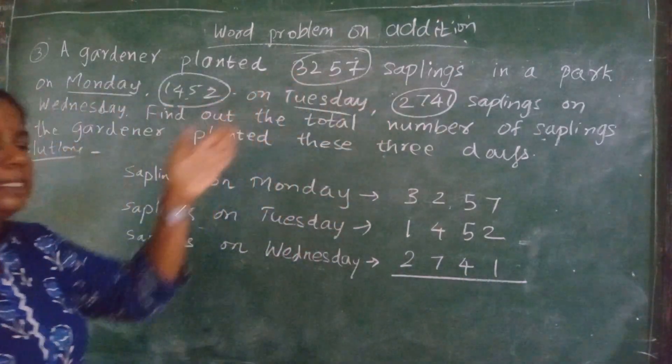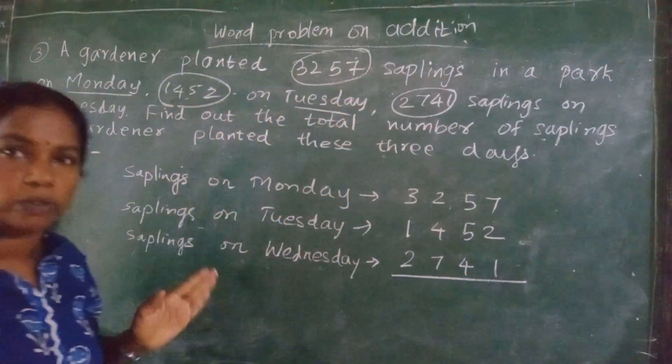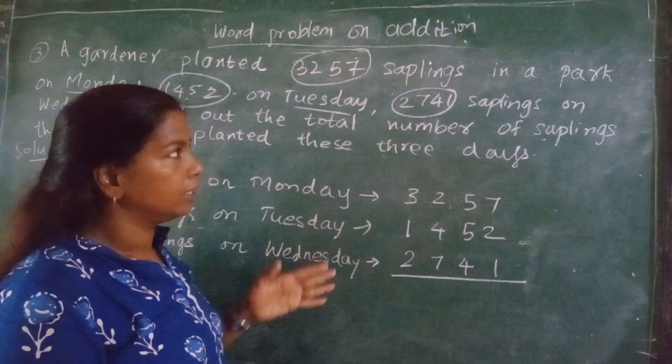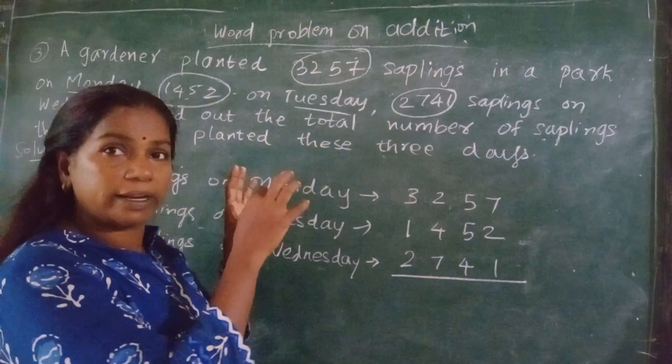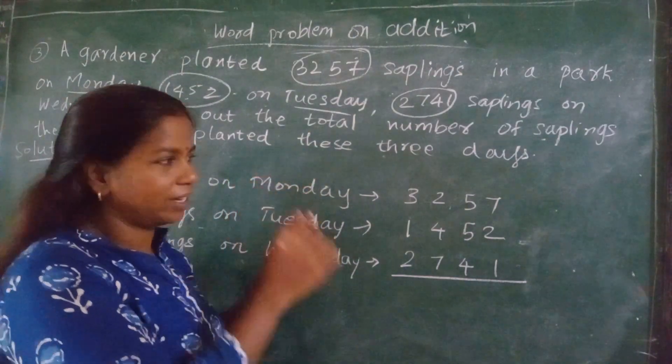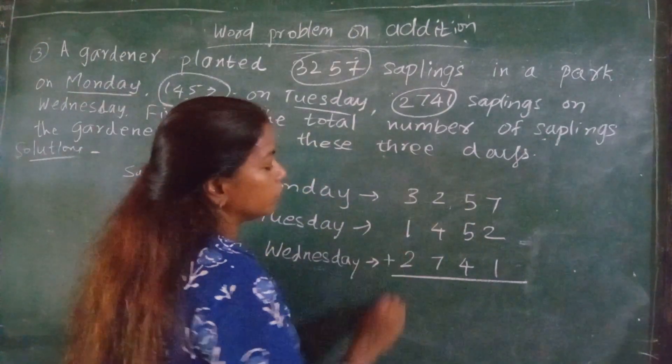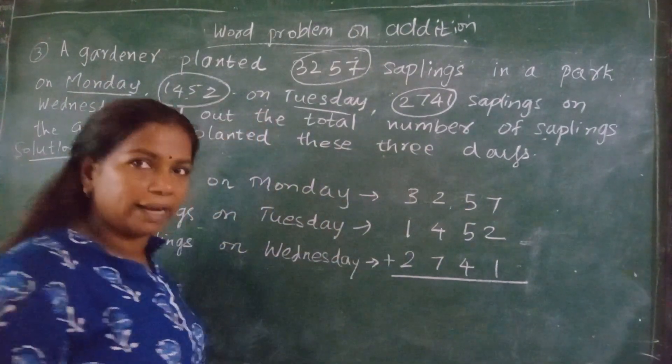It is better to circle and underline like this so that you will not make a mistake. It is easy to identify. Now what you have to do? You have to add this.